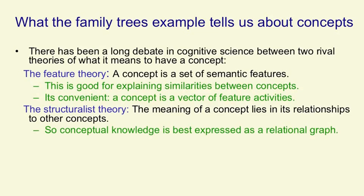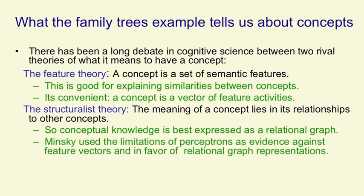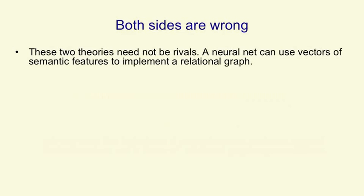In the early 1970s, Marvin Minsky used the limitations of perceptrons as evidence against feature vectors and in favor of relational graph representations. My belief is that both sides in this debate are wrong, because both sides believe that the two theories are rivals — and they're not rivals at all.